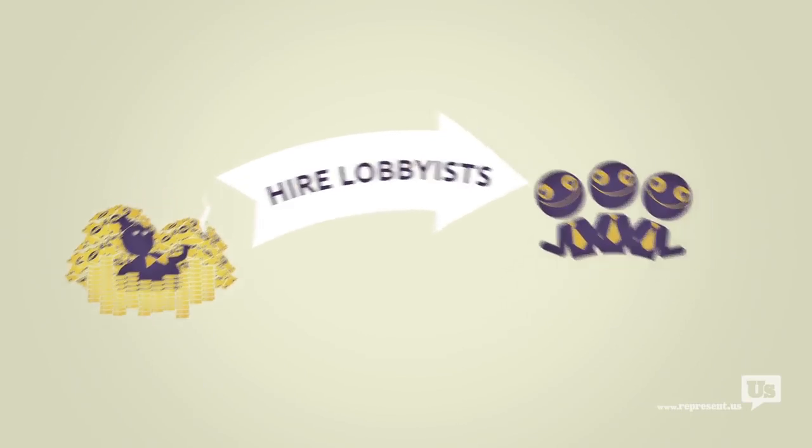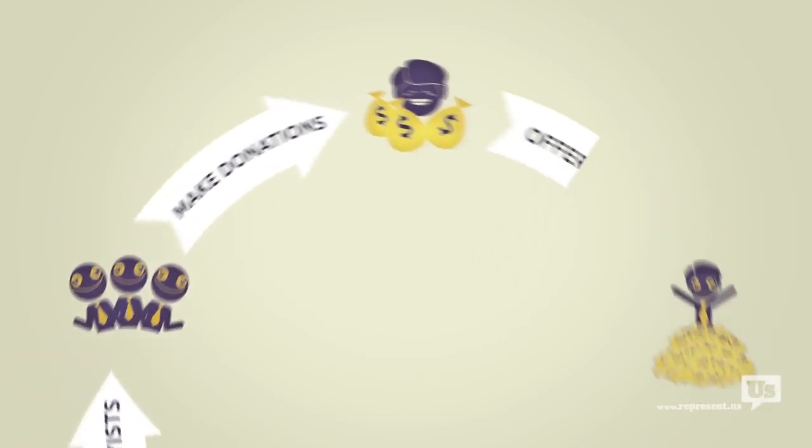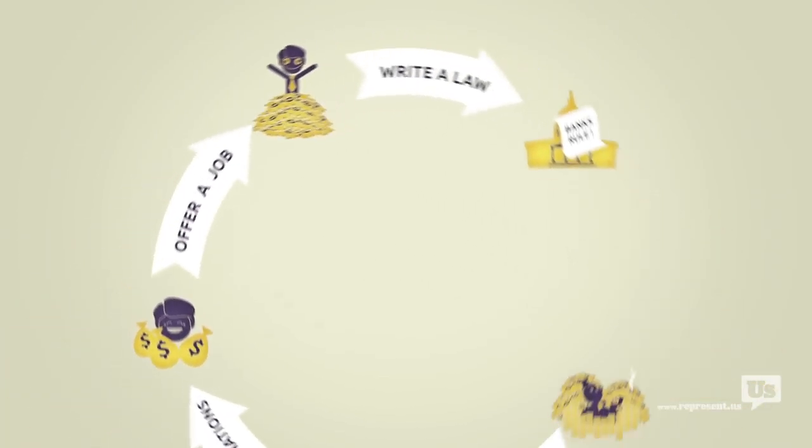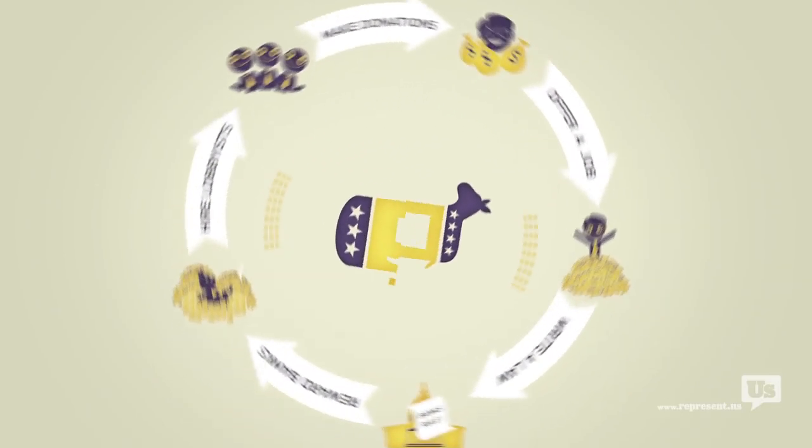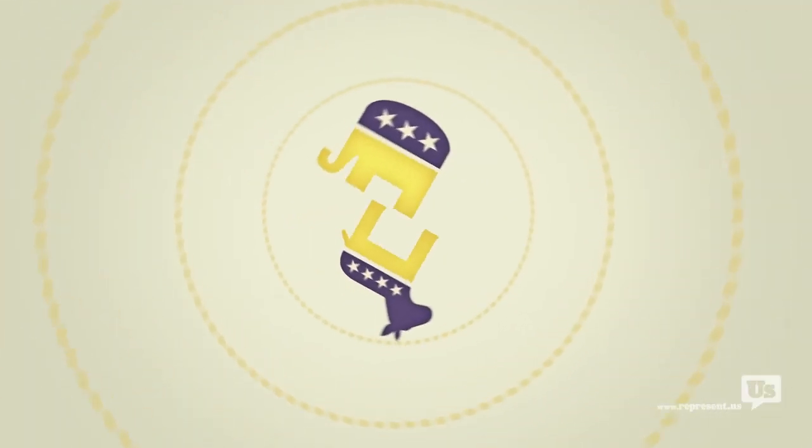A special interest hire some lobbyists. Those lobbyists collect campaign contributions, offer jobs, and then write the laws that Congress then passes to help those same special interests. This happens every day on every single issue with politicians of both parties.